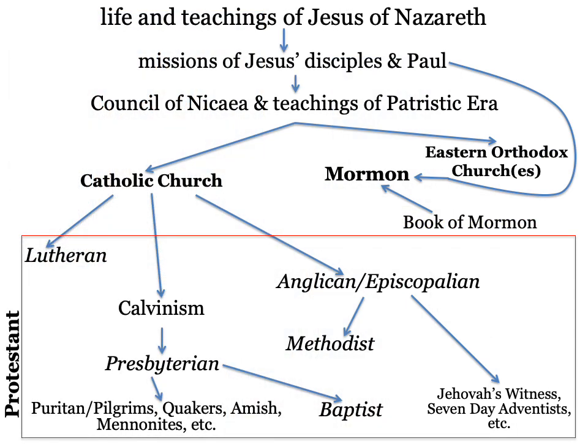That's a breakdown of the Division of Christianity. The four main branches in bold are: Catholic, Eastern Orthodox, Protestant, and Mormon. Within the Protestant box, the mainline denominations in italics are Lutheran, Presbyterian, Anglican/Episcopalian, Methodist, and Baptist. The others are examples of non-mainline Protestants — there are thousands of them. Think about which one might interest you, because next week we're going to spend some time looking at Protestant denominations. Have a good one, y'all.